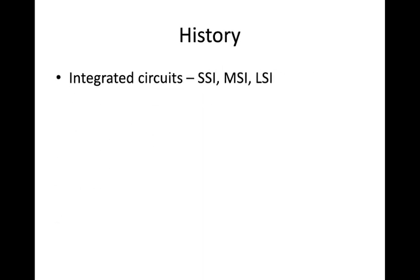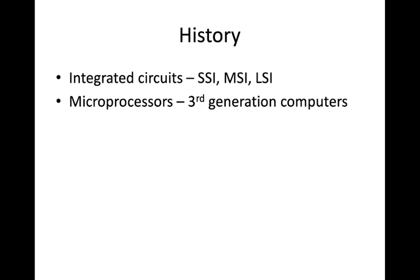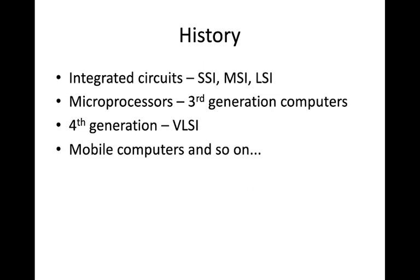Then integrated circuits came. People started integrating things on IC chips — small scale integration, medium scale integration, large scale integration. They developed microprocessors using these ICs, marking the beginning of third generation computers, with many computers coming in the 1960s and 70s. Then came fourth generation computers using very large scale integration (VLSI), trying to include a lot of things inside a single chip. Later we saw mobile computers, smartphones, tablets, and laptops.